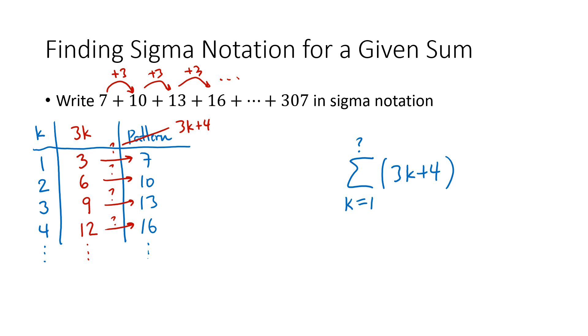And now the only thing I need to figure out is where will this pattern end? I need to end up at 307, and the question is what value of k corresponds to 307? Well I know that this is going to be 3k plus 4 for some value of k, so I just solve to figure out the value of k. Subtract 4 from both sides, divide both sides by 3, 303 divided by 3 is 101. And so that's what goes at the top of my sigma notation. So a little bit of detective work, a little bit of sleuthing around can help us figure out these patterns.